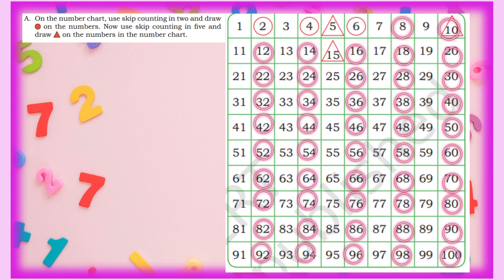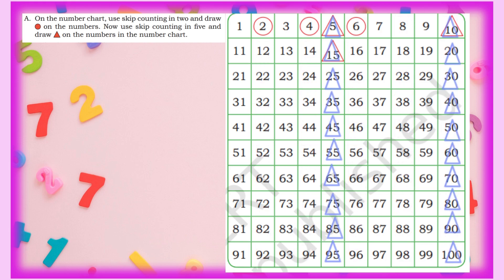Similarly, the next part says: use skip counting in 5s and draw a triangle on the numbers in the number chart. Just as we skipped one digit at a time before, now we draw a triangle on every 5th number: 5, 10, 15... continuing to 65, 70, 75, 80, 85, 90, 95, and 100. So we have drawn circles and triangles to complete this part.